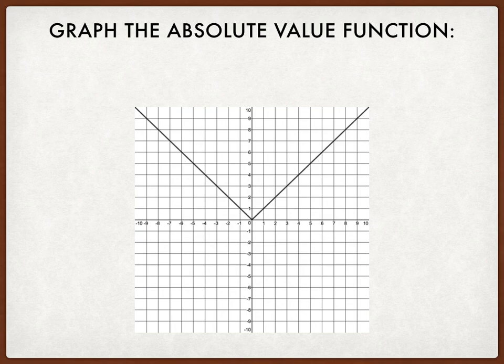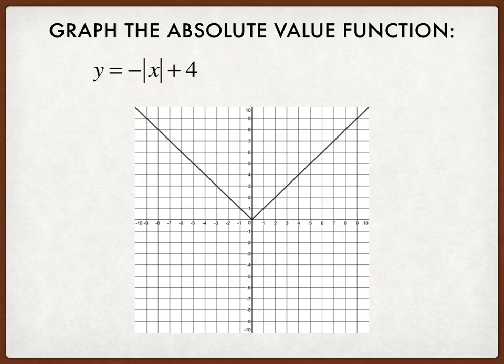Here, let's take a look at y equals negative the absolute value of x plus 4. Let's try to predict what this graph would look like. The first thing I notice because of that negative sign out front, this graph will be reflected across the x-axis. And then because of the plus 4, it's going to be shifted 4 units up from there.